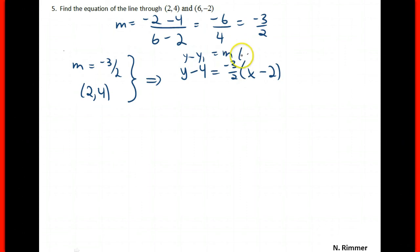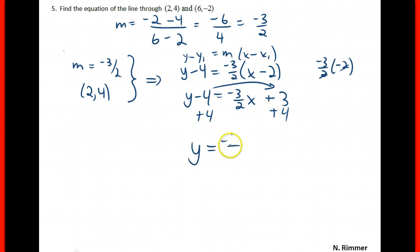So we'll have y minus 4 is negative 3 halves of x. If you take negative 3 halves and you multiply by negative 2, you end up with a positive 3. The last step is to add this 4 over to have the point slope formula of negative 3 halves x plus 7.